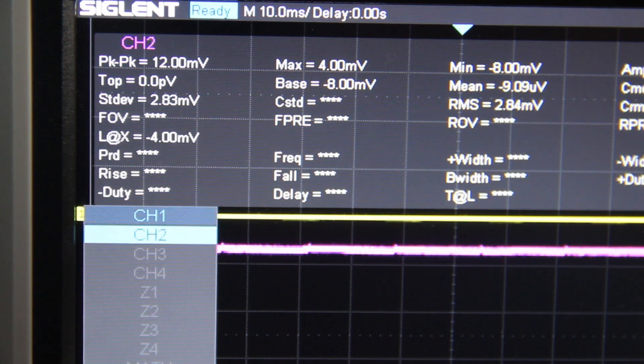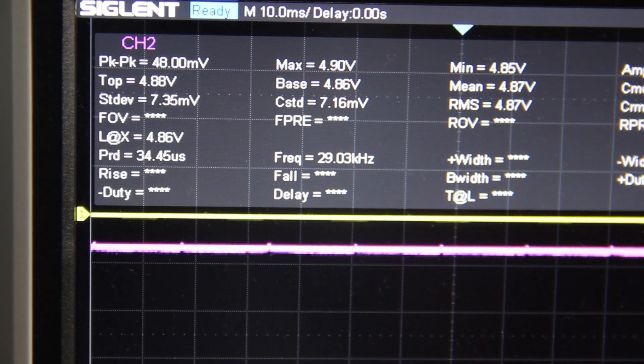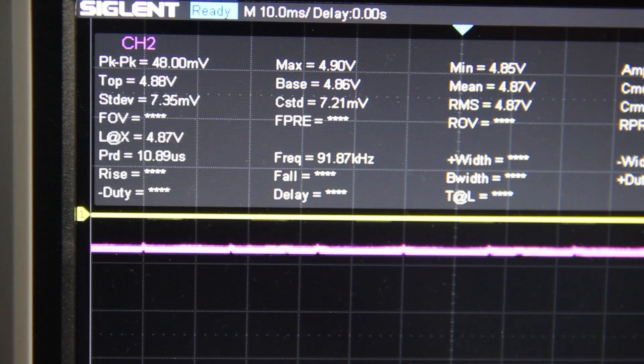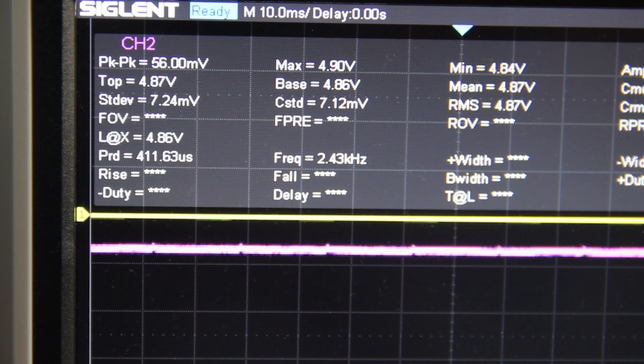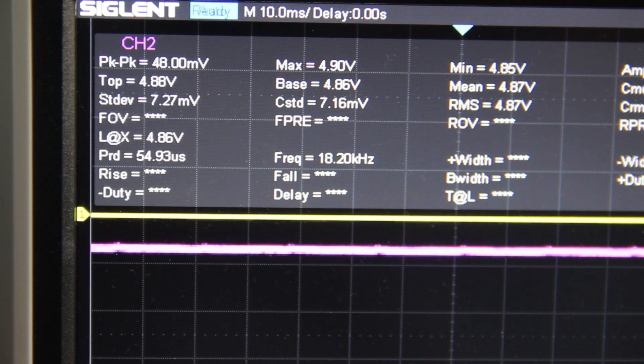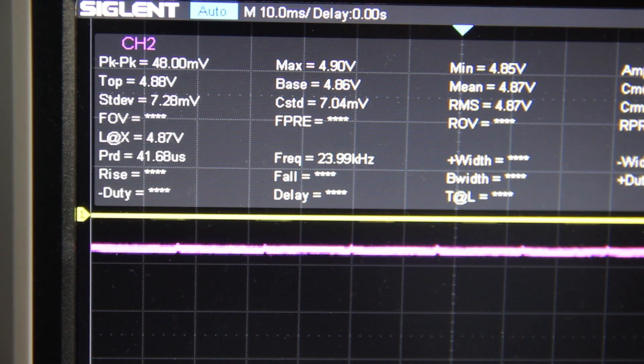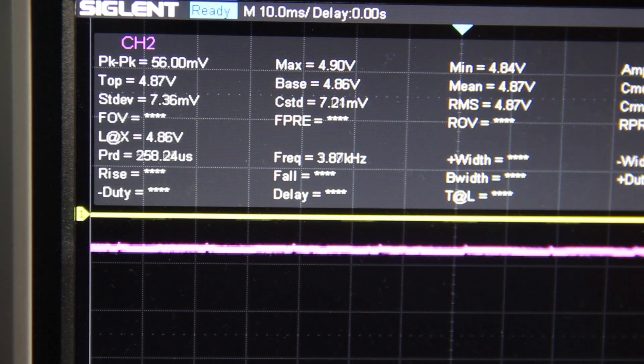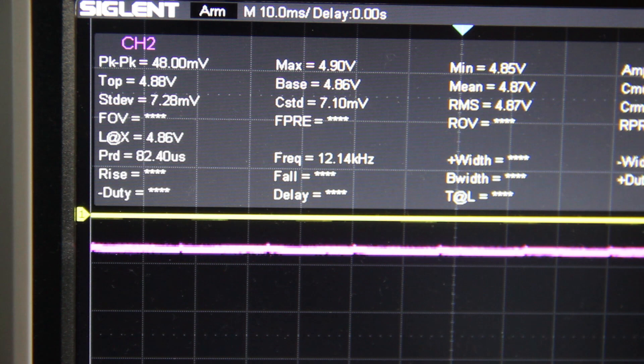As you can see, the peak to peak value over here is changing as well when I put some pressure on the cell. It's dropping down to 84. No, it's dropping down to 48.